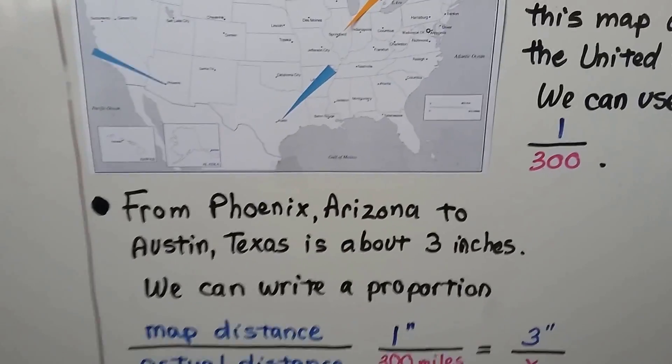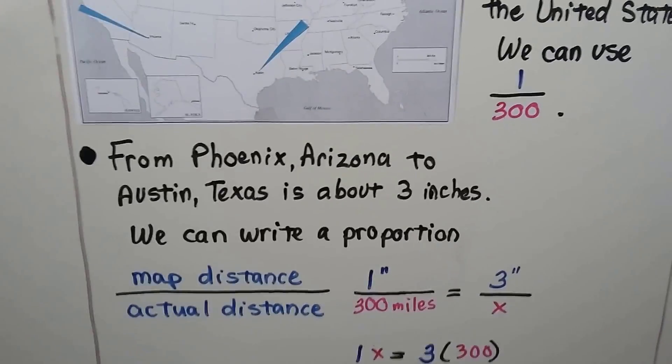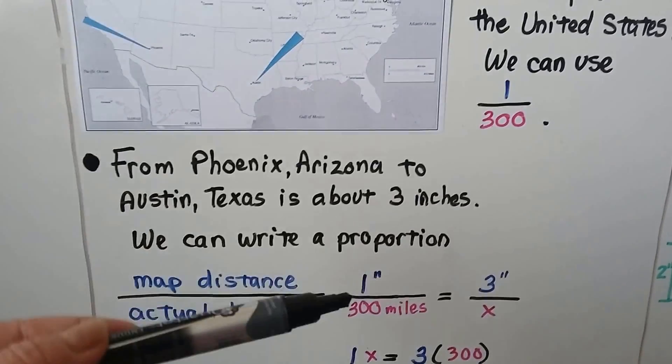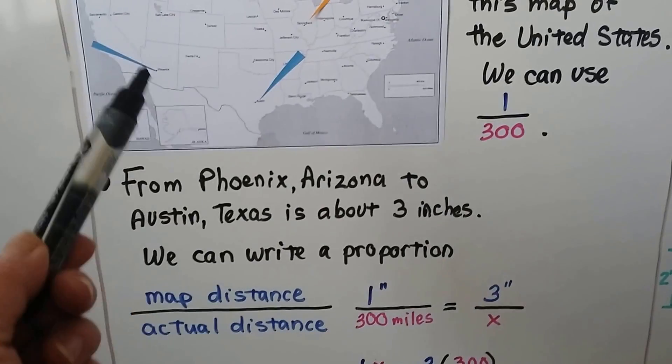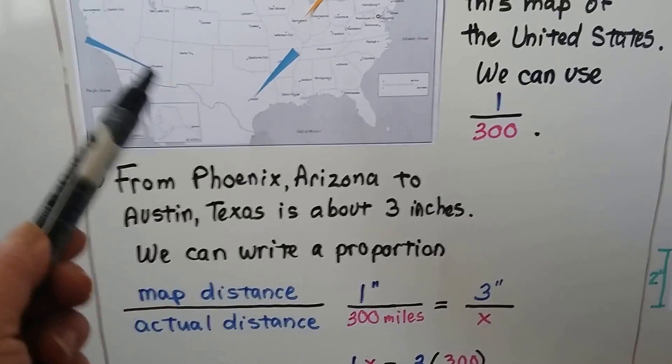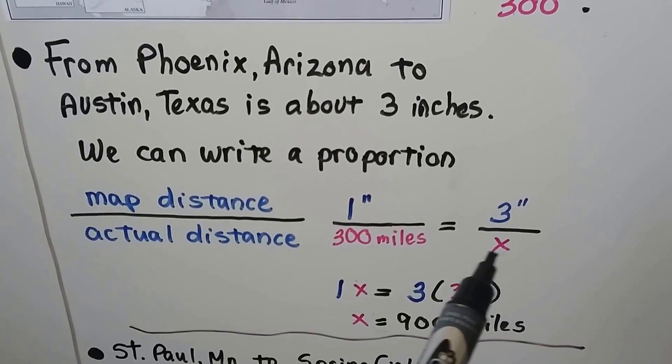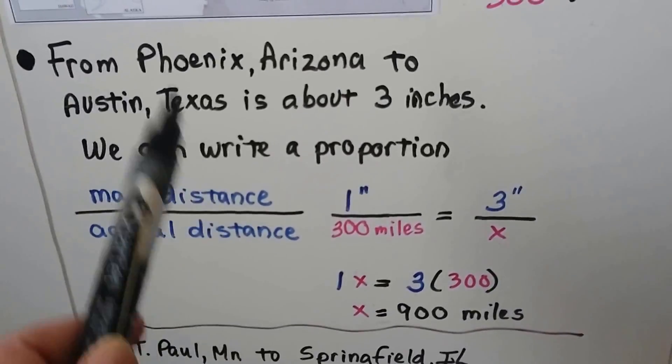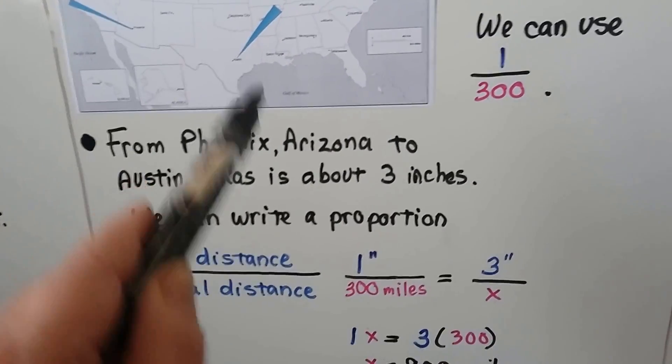From Phoenix, Arizona to Austin, Texas, I measured it, it's about three inches. And we can write a proportion. It's the map distance of one inch equals the actual distance of three hundred miles. Then, that's going to equal the three inches that I measured over x. That's going to be the actual miles of the distance between the two cities. We cross multiply for our proportion. We get one x equals three times three hundred. That tells us that it's nine hundred miles between these two cities. It's nine hundred miles straight.